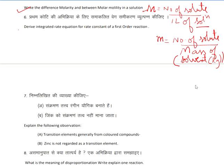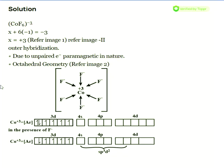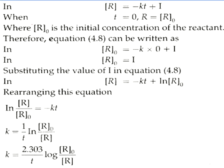Next question: derive the integrated rate equation for the rate constant of a first order reaction. In a first order reaction, we can see that r is equal to k — rate constant — times concentration, which gives us r = kt plus the initial term i.